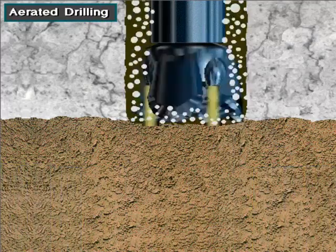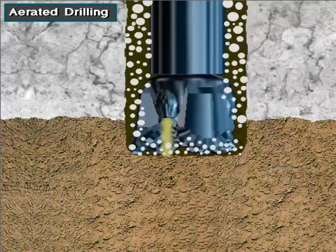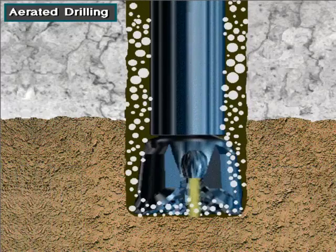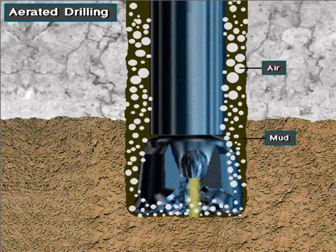In some cases, the rig operator may use aerated mud, which, like foam drilling, helps prevent clogging of the well bore. Aerated drilling uses both mud and air pumped into the standpipe at the same time.